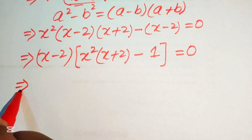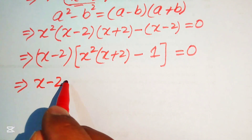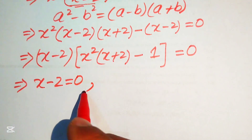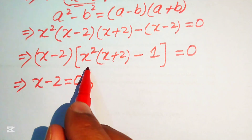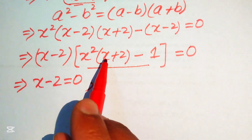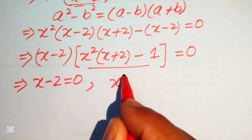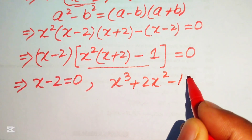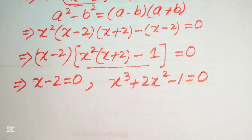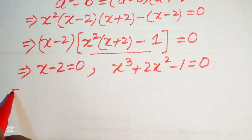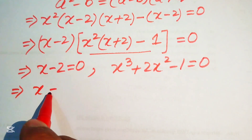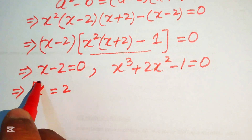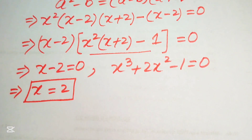We split into two cases. Case 1: x - 2 = 0, giving x = 2 as the first real solution. Case 2: x²(x + 2) - 1 = 0, which expands to x³ + 2x² - 1 = 0. Since our equation is fourth order, we expect four roots total.